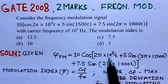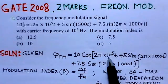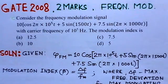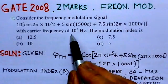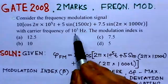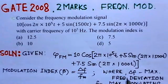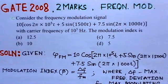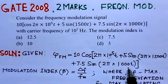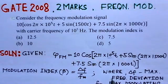The first part represents the carrier frequency, which is also given as 10⁵ Hz. The second and third terms represent the modulating signals.